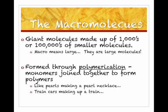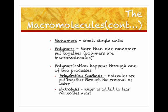They're formed through polymerization. Polymerization is just the general name for building and breaking down macromolecules. We've talked about two types of polymerization: dehydration synthesis and hydrolysis. The monomers are the small single units, and polymers are the big macromolecule. Polymer is just another term for macromolecule.